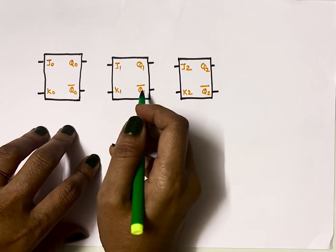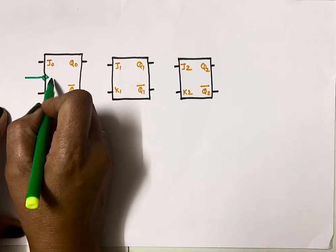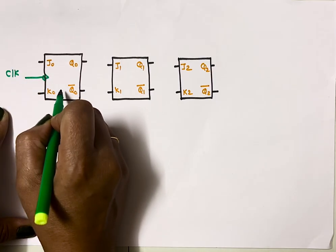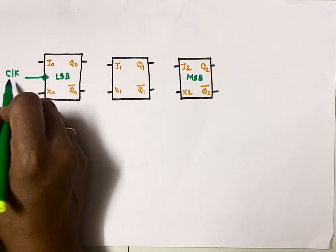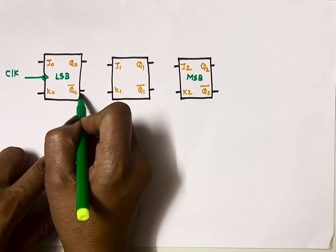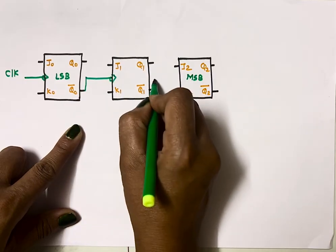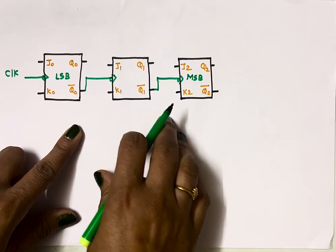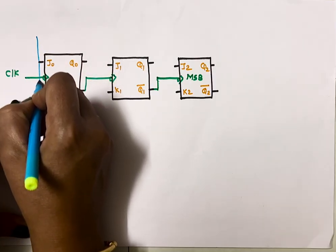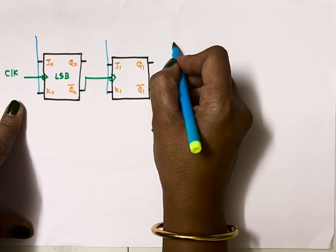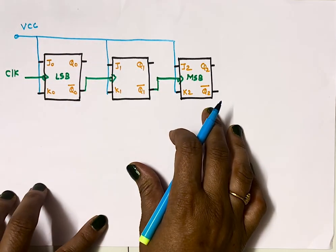Now let's start with the circuit diagram. I need three flip-flops; I have taken JK flip-flops. You can use JK flip-flops or T flip-flops for ripple counter design. I'll use negative-edge triggered clock. The external clock is connected to the first flip-flop — the flip-flop that receives the external clock generates the least significant bit, and the last one generates the most significant bit. Since this is a down counter, Q0-bar acts as the clock input to the second flip-flop, and Q1-bar acts as the clock input to the third. In a ripple counter, the J and K inputs of every flip-flop are permanently connected to VCC.